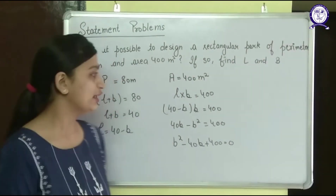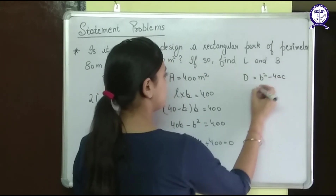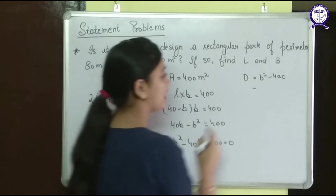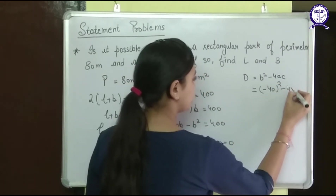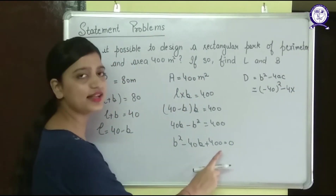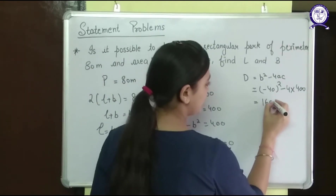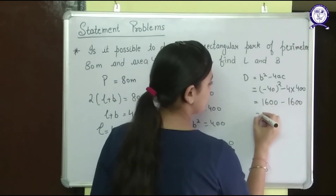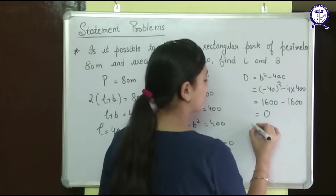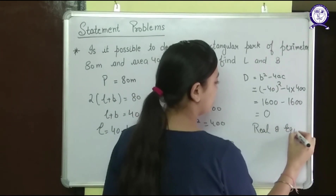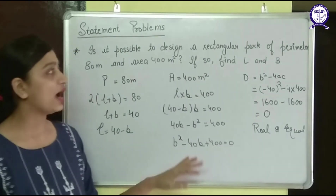Now I can find D. D equals b squared minus 4ac. Here b is minus 40, so minus 40 squared, minus 4 into 1 into 400. This gives 1600 minus 1600, which equals 0. D equals 0 means real and equal roots. This means yes, it is possible to design a rectangular path like this.